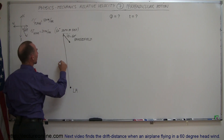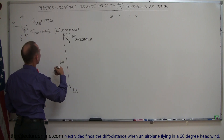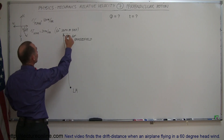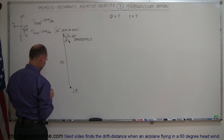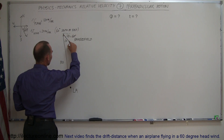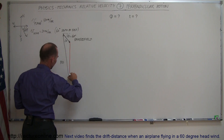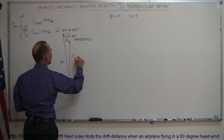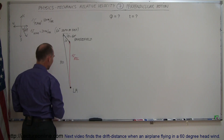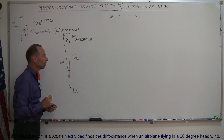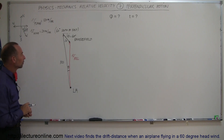The length of the plane's velocity vector is 120 meters per second, and the length of the wind vector is 20 meters per second. Somehow they need to add up to the resultant vector in such a way that the plane will appear to fly straight north — directly to Bakersfield.